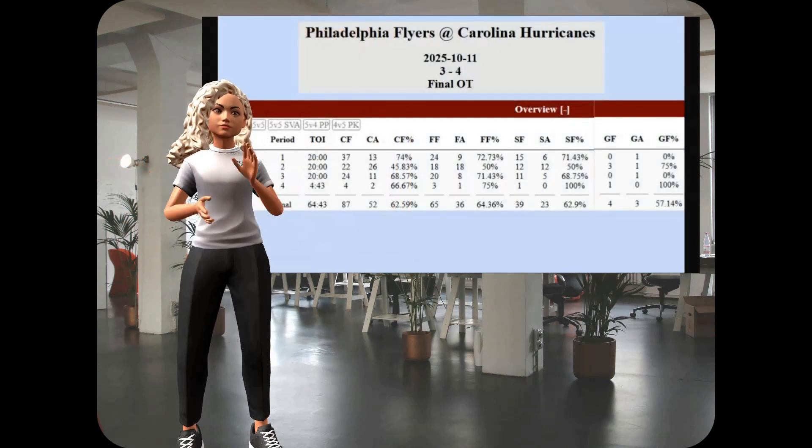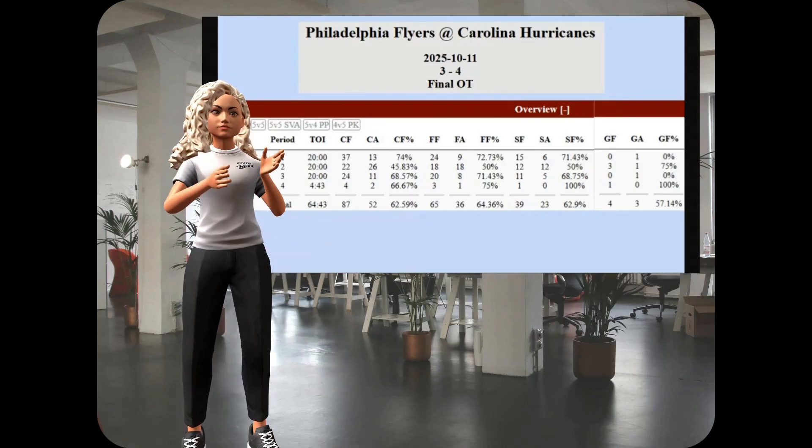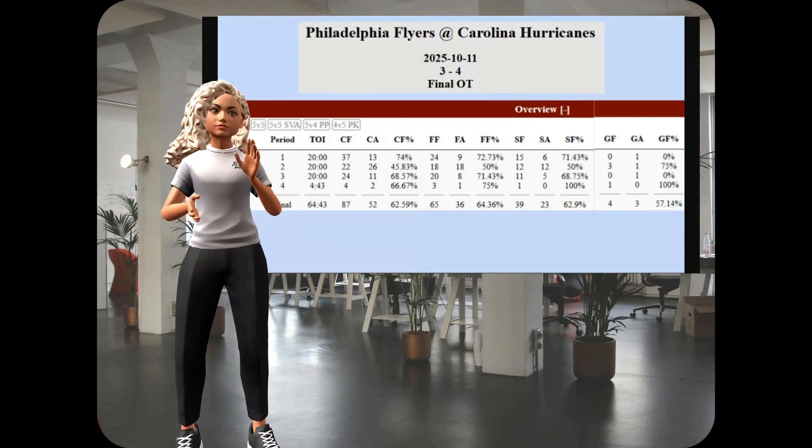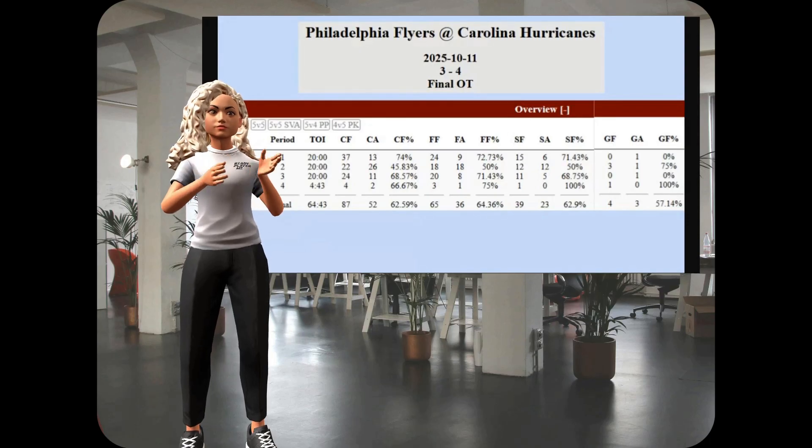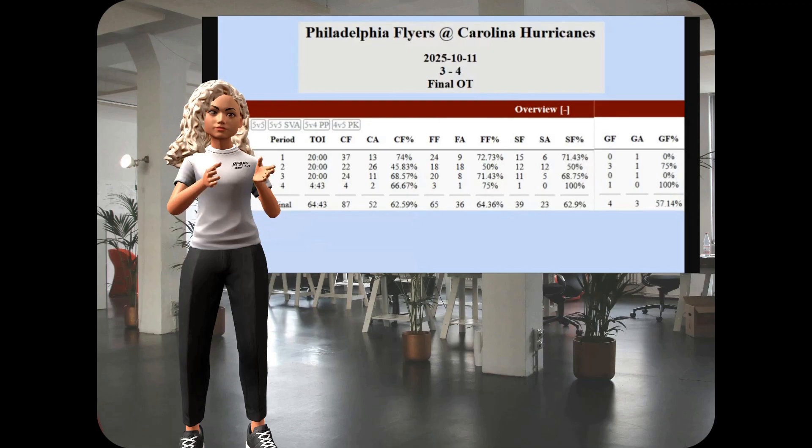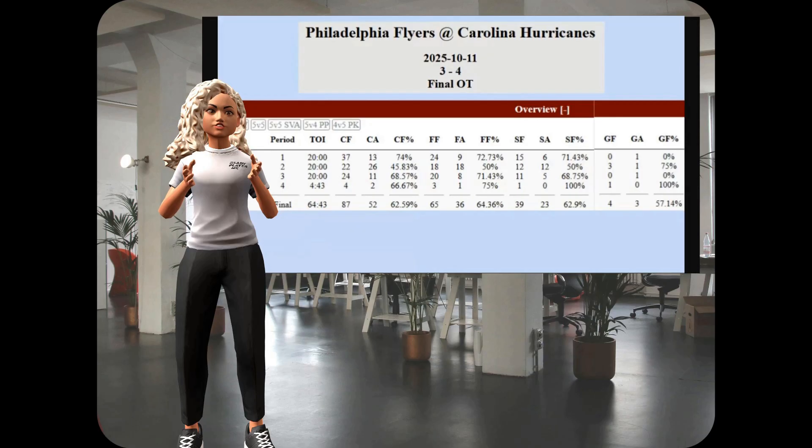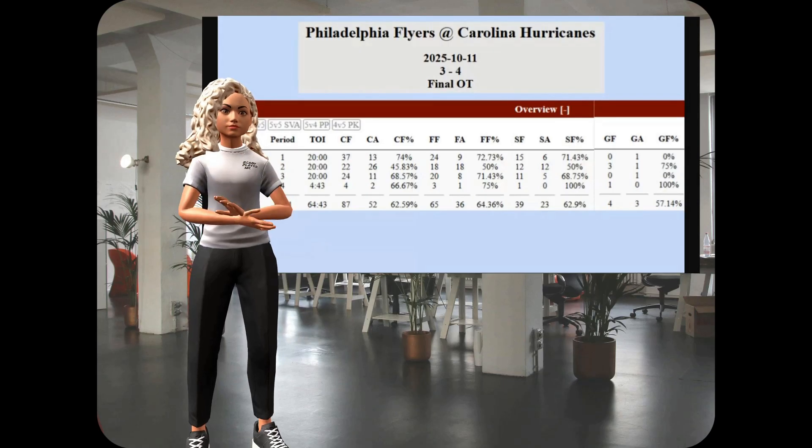So, here is the natural stat trick chart for the Carolina Hurricanes game against the Philadelphia Flyers on Saturday. You can see the time on ice, and after the time on ice is first the Corsi numbers, how many shot attempts did the team have for them and against them, and what the overall percentage of all shot attempts were in favor of the Canes. And then it goes into the Fenwick, and then into the shots for, and then into the goals for, as well as goals against.